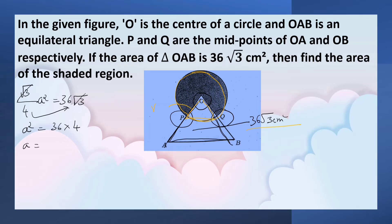A is equal to root of 36 into 4, that is equal to root of 36 is 6, root of 4 is 2. So, A is equal to 12 cm. Side of the equilateral triangle is 12 cm.